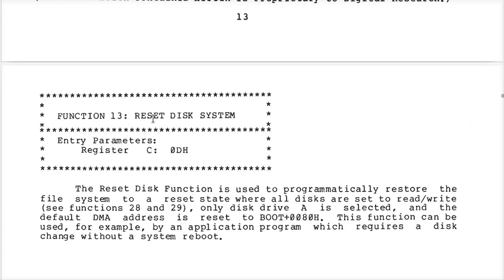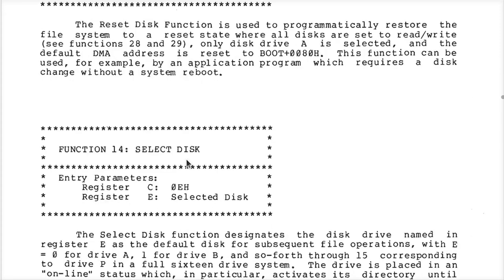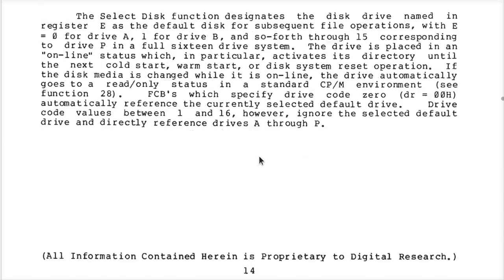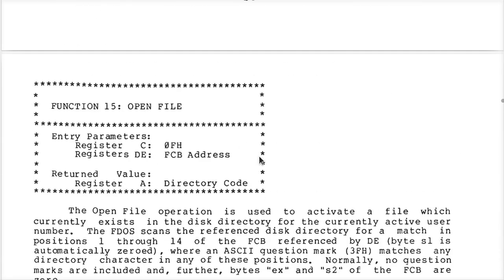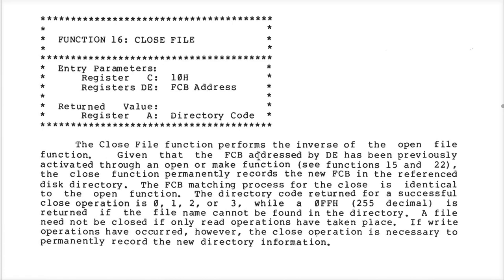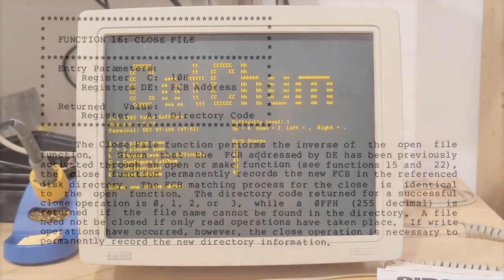You can obviously ask it to reset the disks, start looking at files on disk B instead of disk A, and it tells you what numbers mean what for different drives, how to open files, and so on. You can work your way through here and get to the more fancy stuff. I'll talk about some of these other ones later on when we write a more sophisticated program.